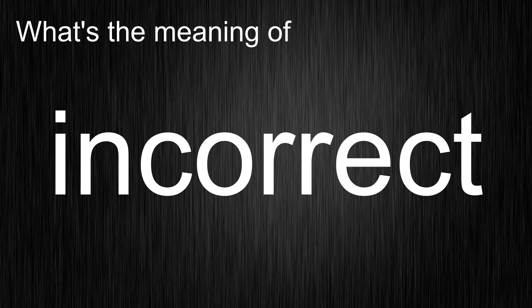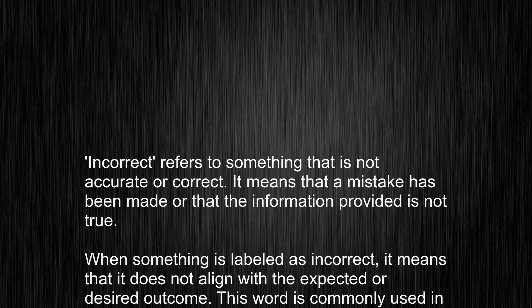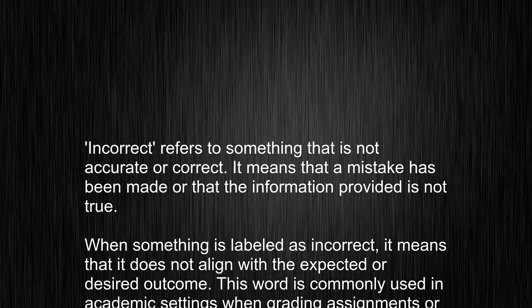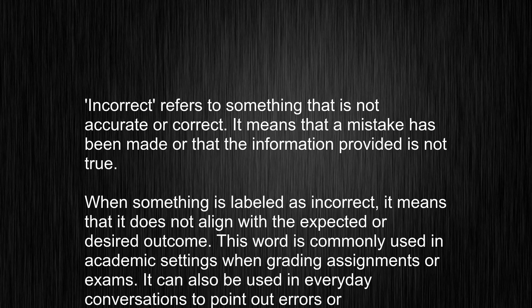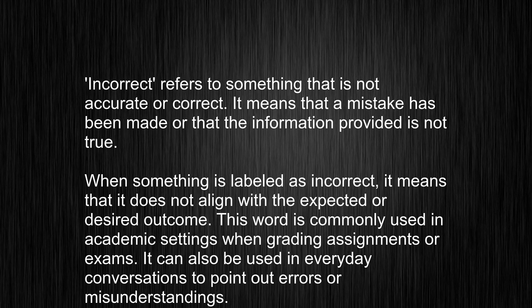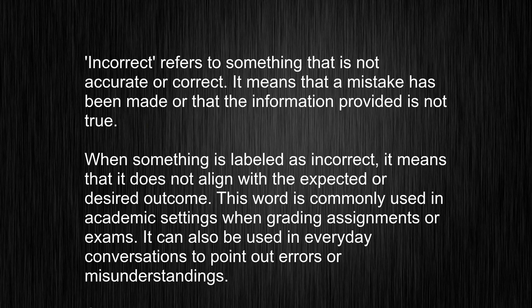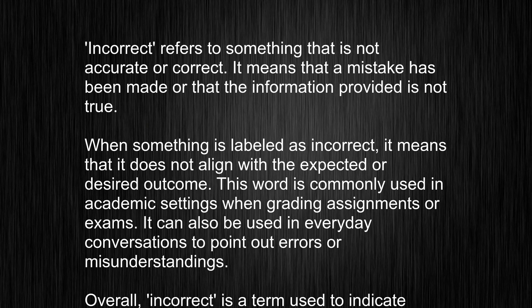Meaning of incorrect. Incorrect refers to something that is not accurate or correct. It means that a mistake has been made or that the information provided is not true. When something is labeled as incorrect, it means that it does not align with the expected or desired outcome.